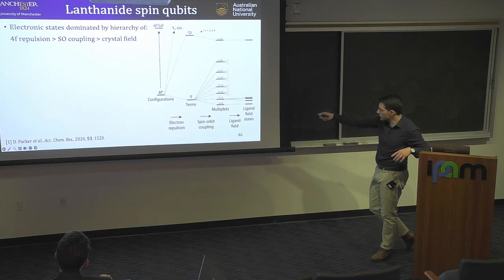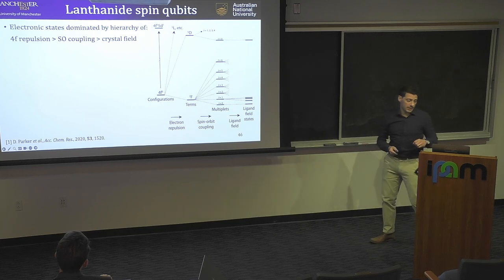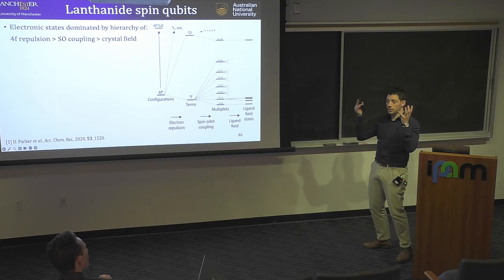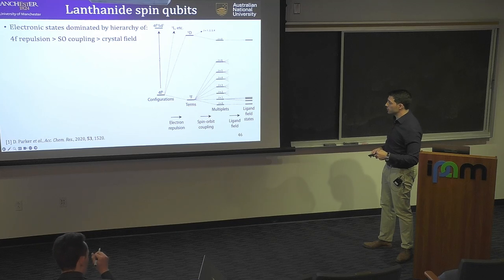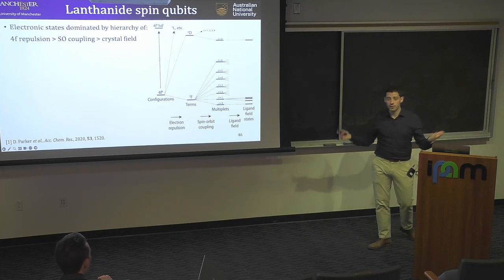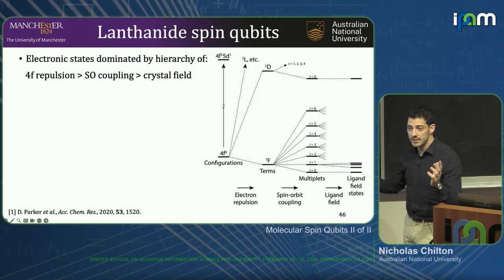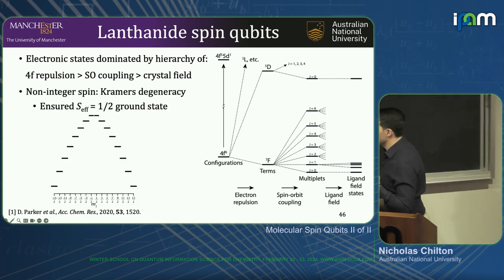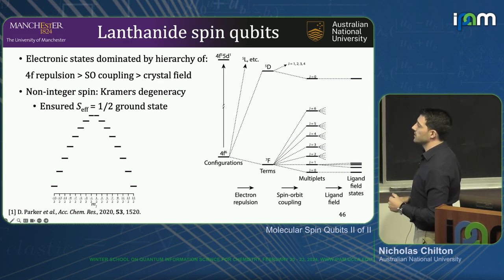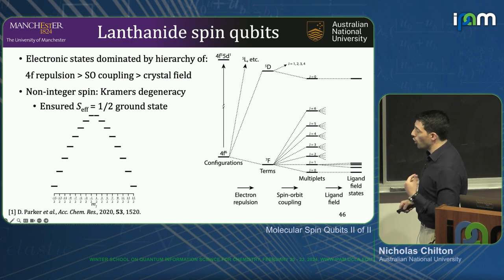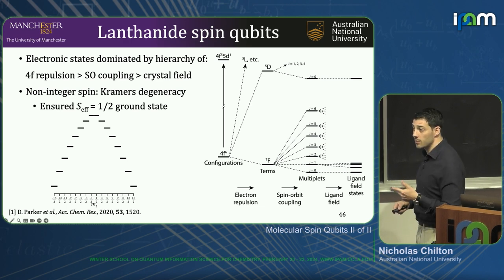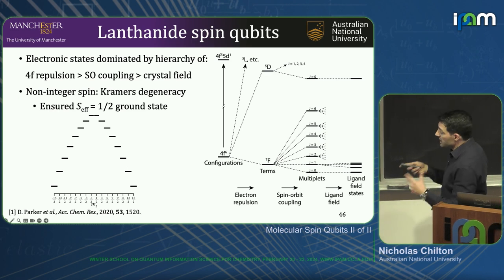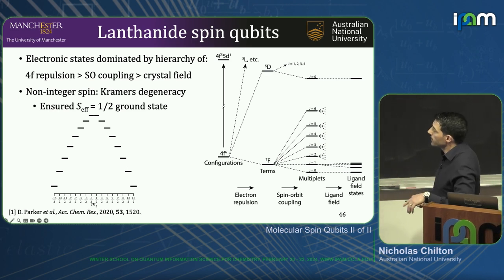J is a good quantum number. But once you put a 4F ion into a molecule, you reduce the symmetry from spherical to something very low symmetry — as far as I'm concerned, it can be C1. You split these multiplets into various ligand field or crystal field states. If you have a Kramers non-integer spin system — for instance, dysprosium with a spin-5/2 ground state — you will always have effective spin-1/2 states, doubly degenerate Kramers doublets in zero magnetic field. You can use the ground pair as an effective pseudo spin-1/2 for quantum information or qubit applications.